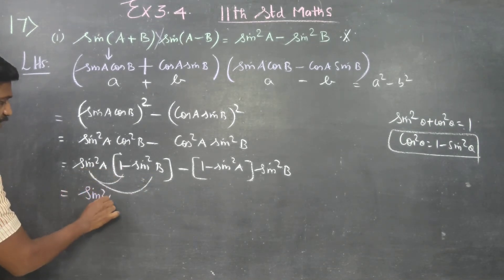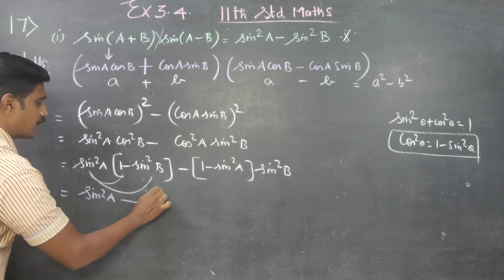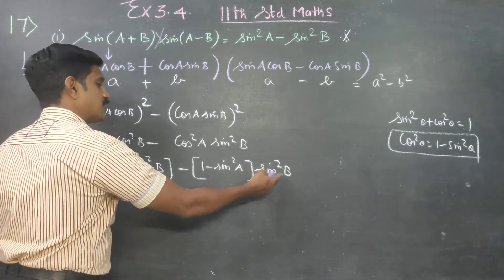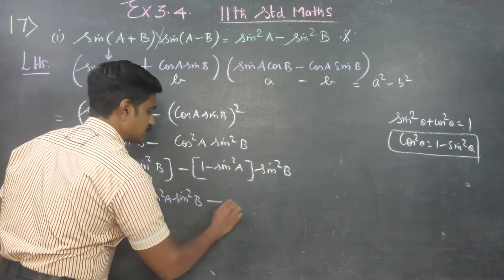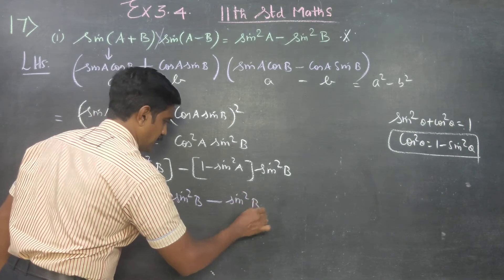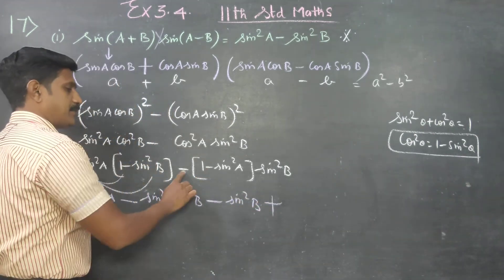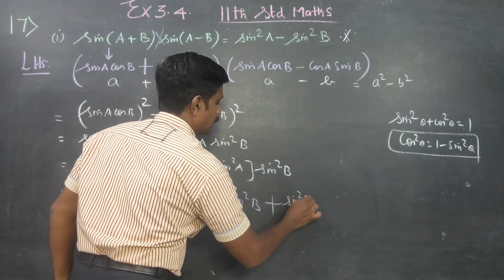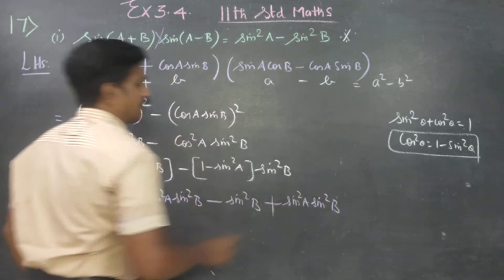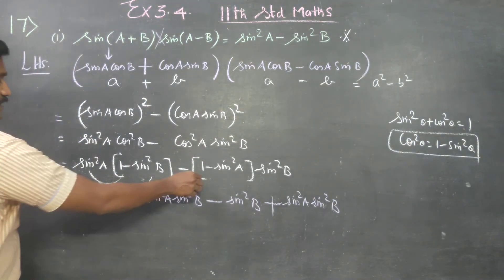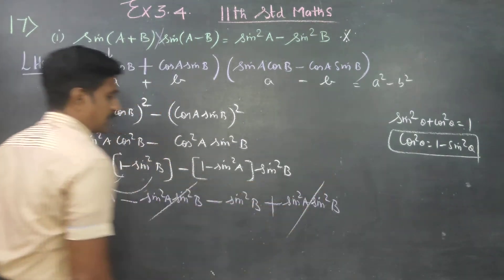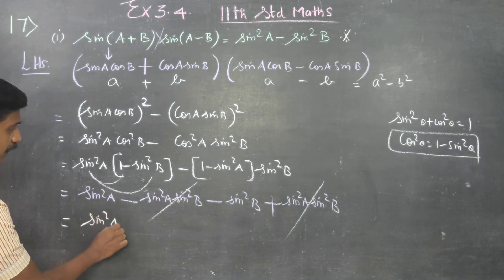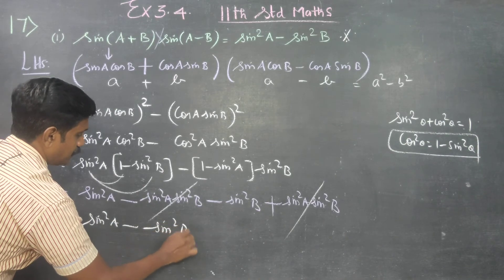Substituting and simplifying: sin²A(1 − sin²B) − (1 − sin²A)sin²B. Expanding: sin²A − sin²A sin²B − sin²B + sin²A sin²B. The sin²A sin²B terms cancel. The final result is sin²A minus sin²B.